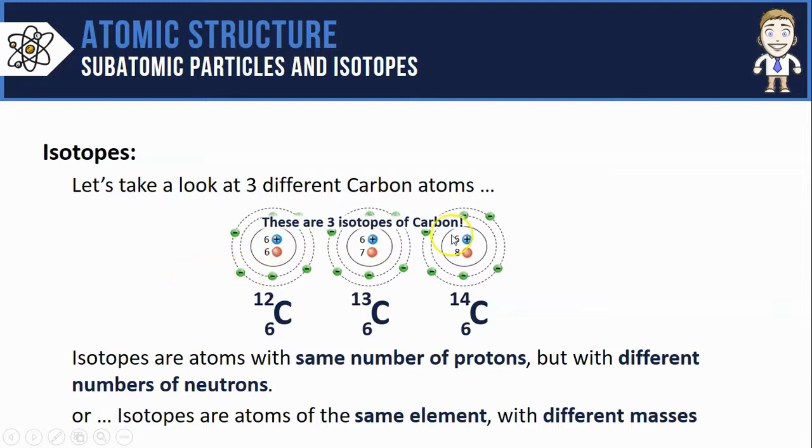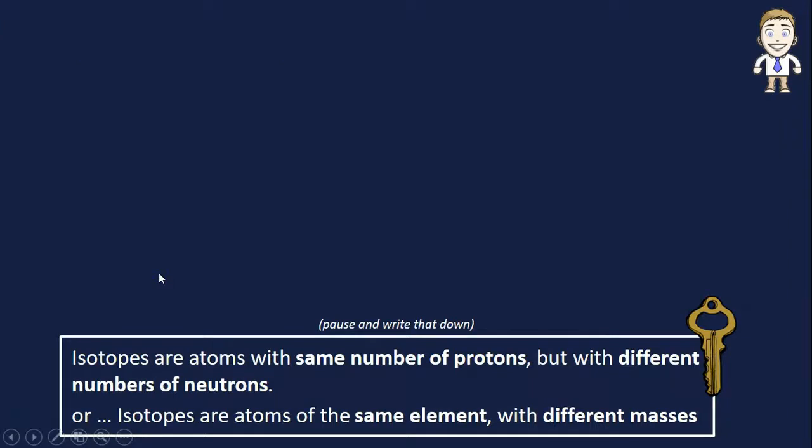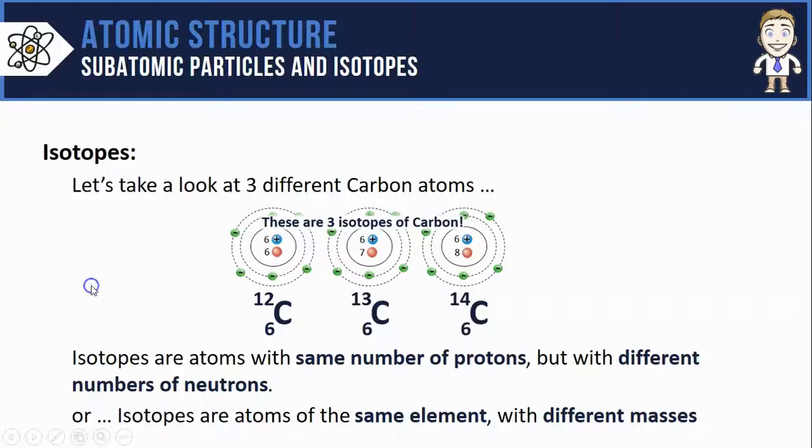What that also means is that isotopes could be defined as atoms of the same element - they all have 6 protons which means they're all carbon - but with different masses: 12, 13, and 14. These definitions for isotopes are some more key ideas. Make sure you pause and write those down too.